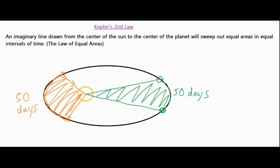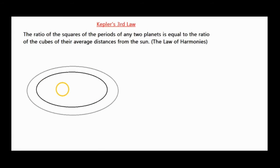Let's go ahead and take a look at Kepler's third law. For Kepler's third law it says the ratio of the squares of the periods of any two planets is equal to the ratio of the cubes of their average distances from the sun, which is called the law of harmonies.